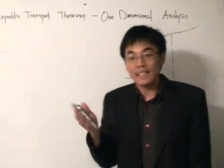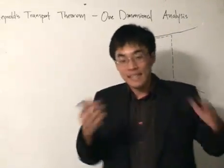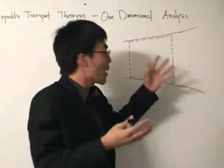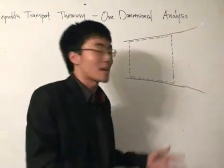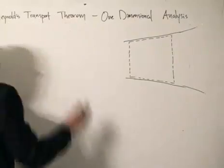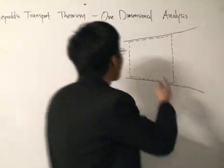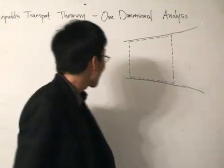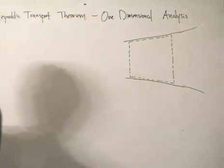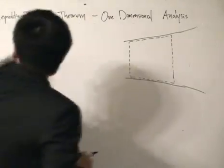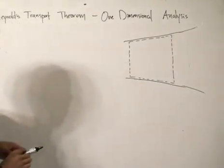Now that you know certain things about the extensive and intensive properties of the system and the control volume, let's go straight into Reynolds' Transport Theorem and one-dimensional analysis. Our limitation here is that we are looking at one dimension, and let's not waste any time because we've got a lot of things to cover. Reynolds' Transport Theorem — we're going to analyze it in one dimension.